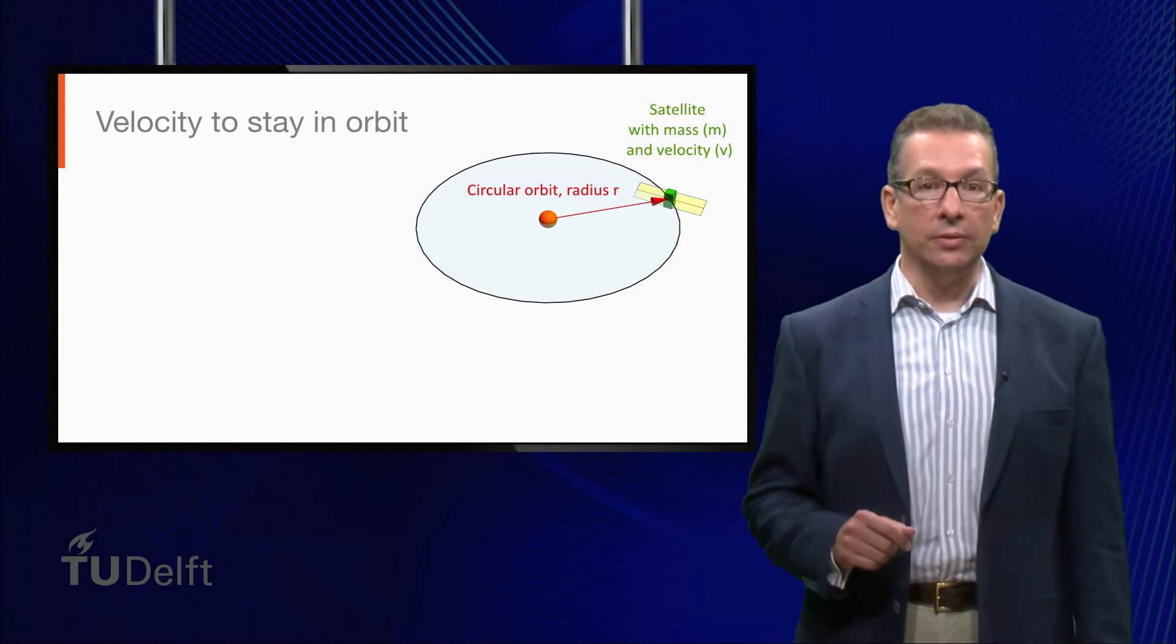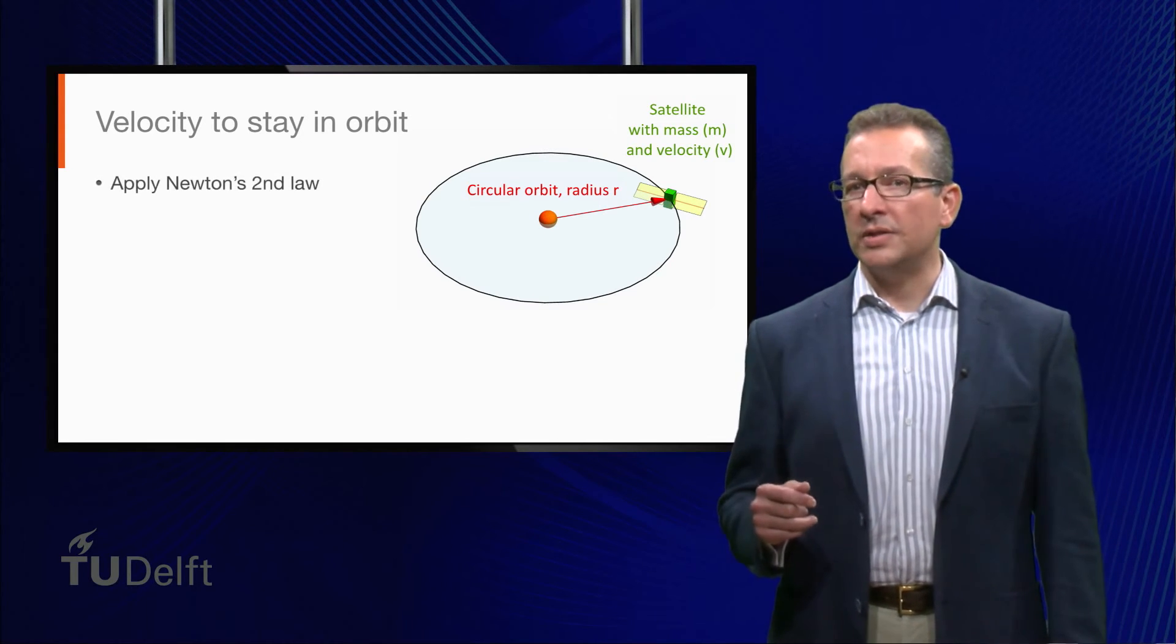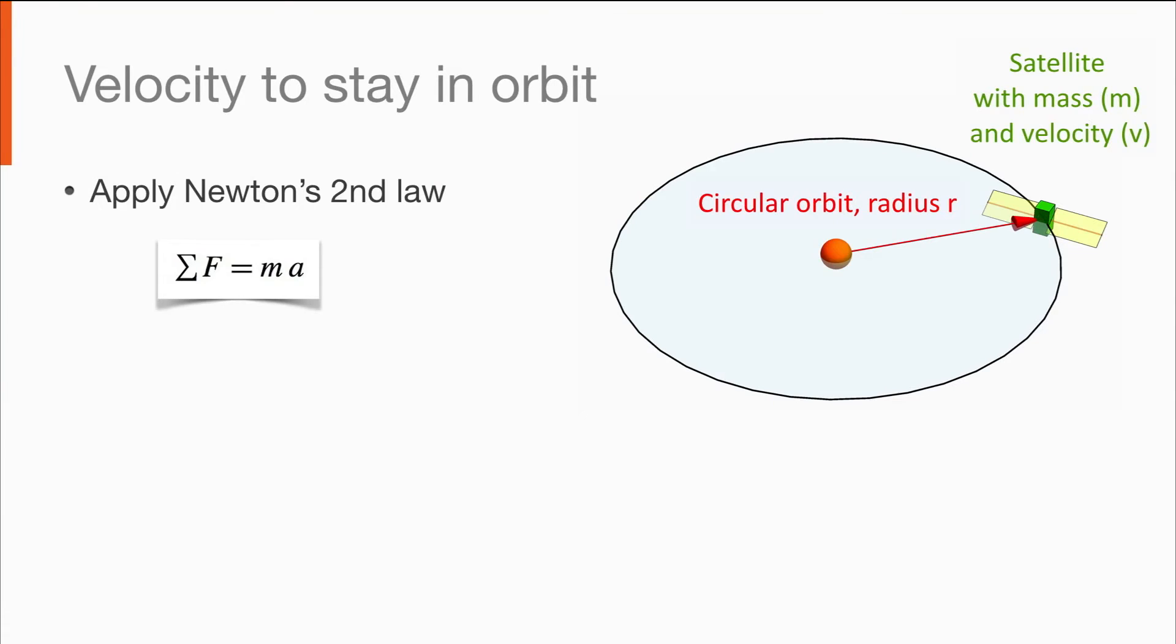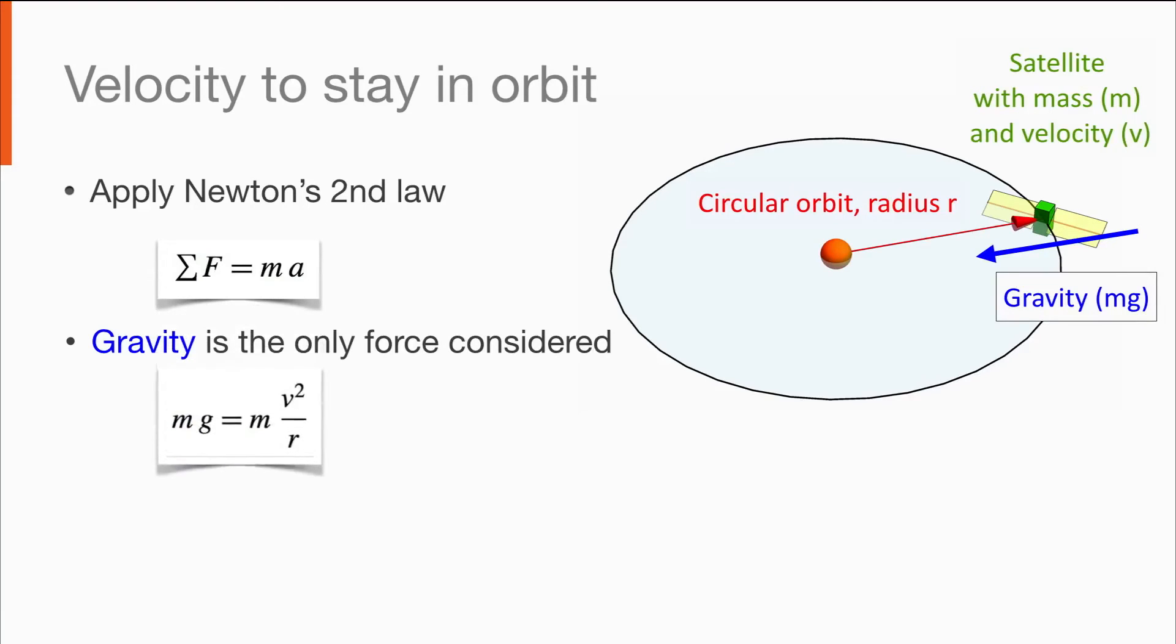Newton's second law states that the sum of the forces on an object is equal to its mass times its acceleration. This is normally a vector equation, but we're going to only analyze it in the radial direction. So we can suffice with the scalar equation shown here. That's okay for now, because the only force we're going to consider is the gravitational force. And in this simple model, that force is along the radius in the negative direction. Indeed, we're going to simplify things even further, for now, and assume the gravitational force is just mg.